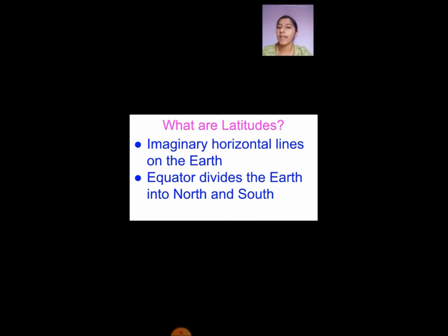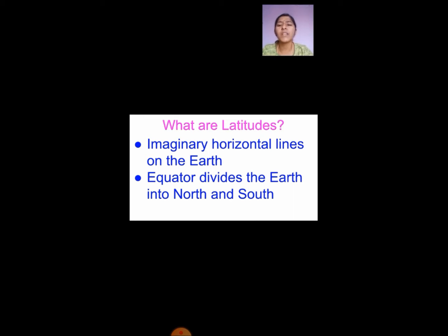Now we are going to see what is an equator. But before that, what are latitudes? Latitudes are nothing but the imaginary horizontal lines on the earth. So the imaginary horizontal lines on the earth are called latitudes. That is called a latitude.